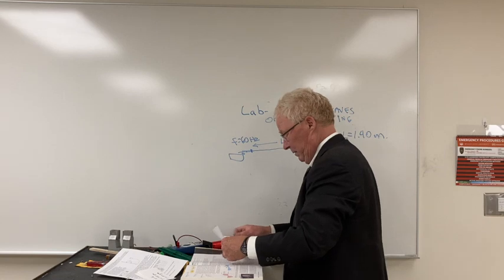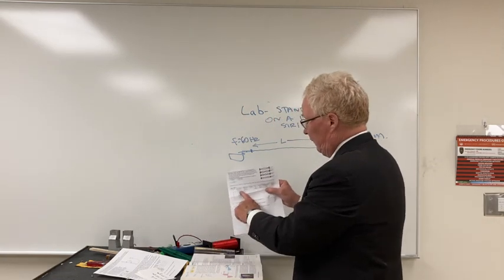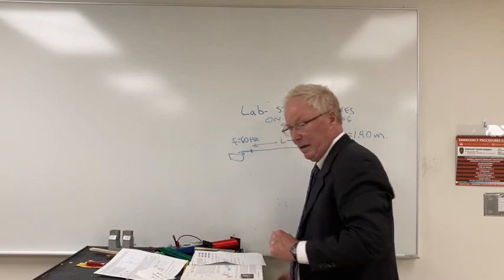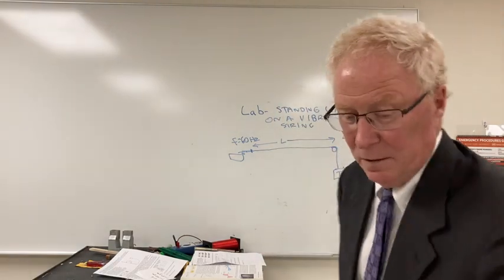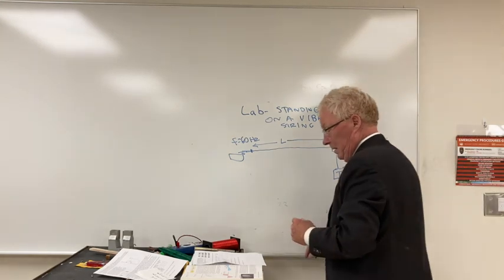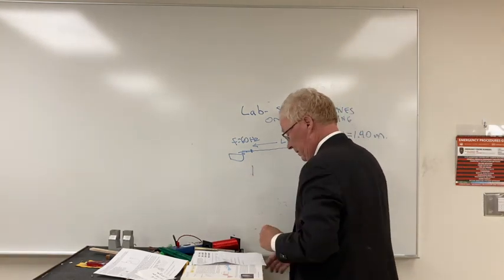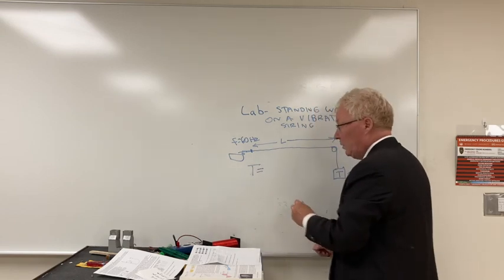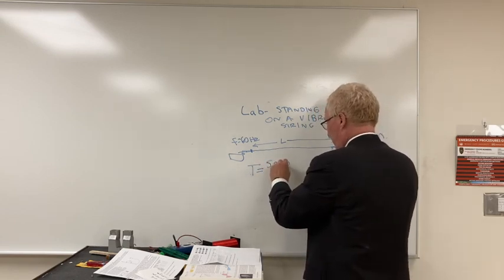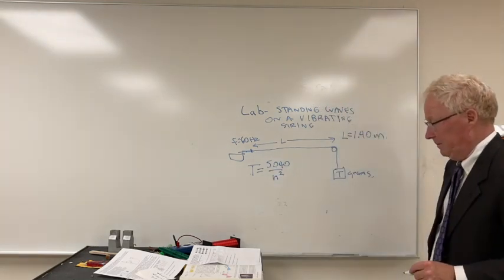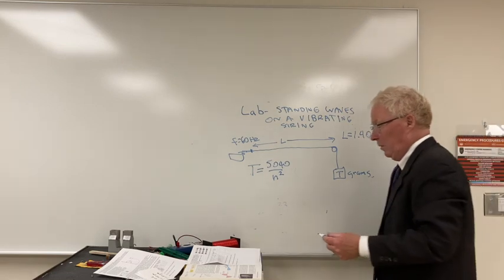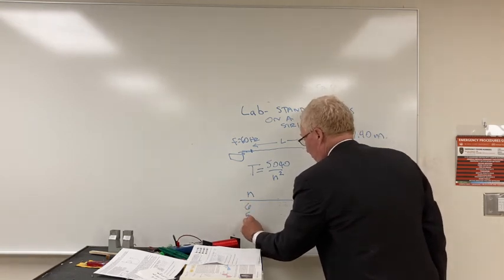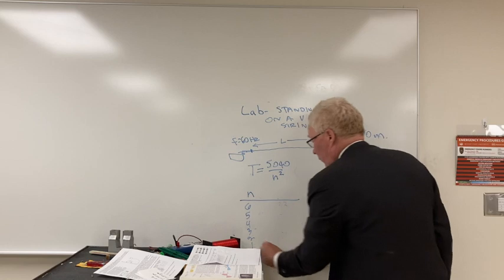What we're going to be doing here for this lab: there's a column, the first column is n, second column is calculated tension, and how we're going to do that is T will be equal to 5040 divided by n squared. So you can fill out the table for n, which is the first column, for six, five, four, three, two, and one.